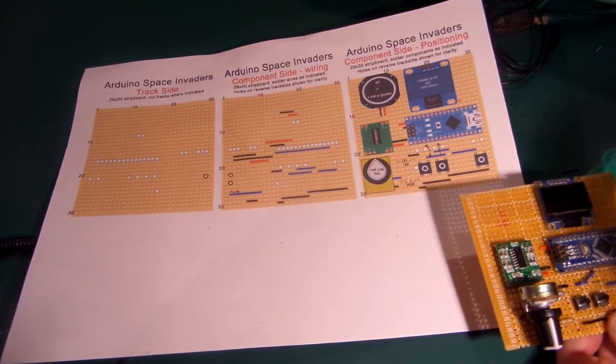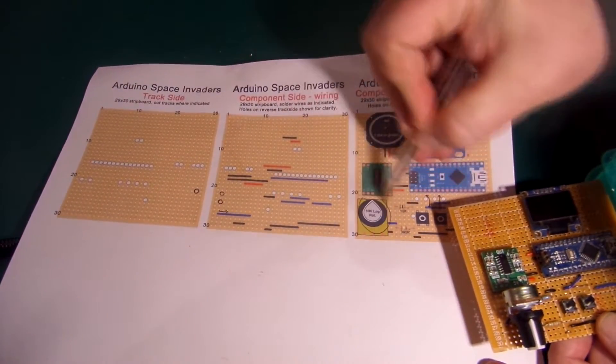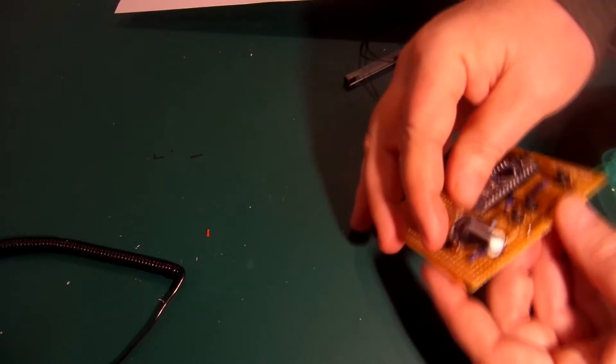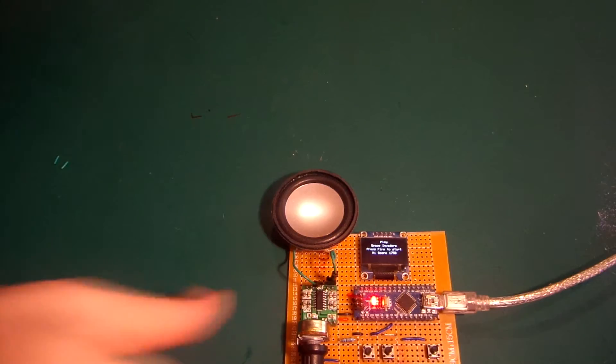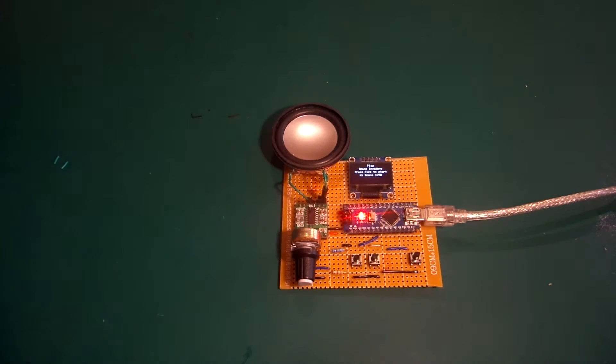And then volume control. We're nearly there, which I've decided to make differently than what I've shown on the original diagram. Again, the diagram has now been changed on the website. And finally we'll add the speaker.